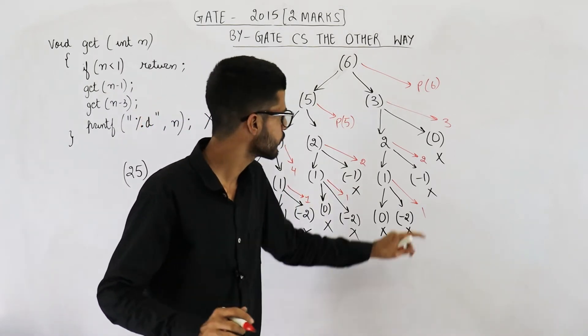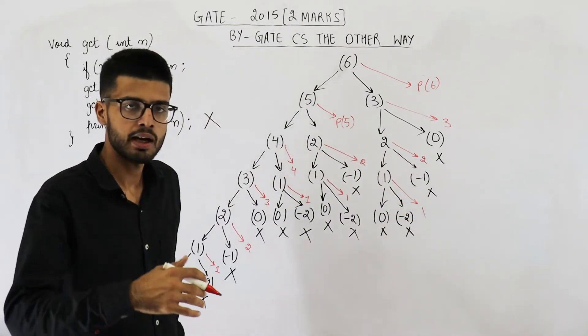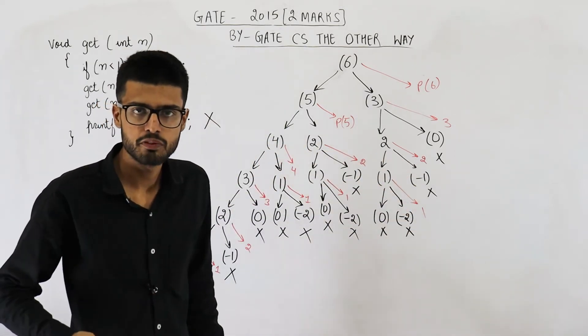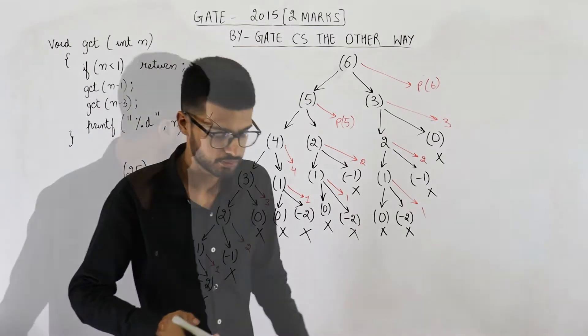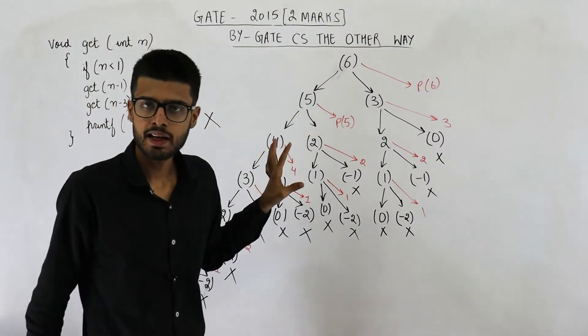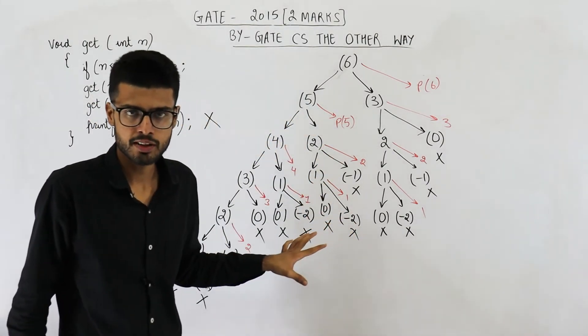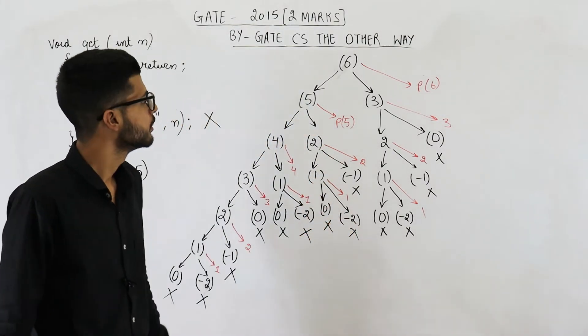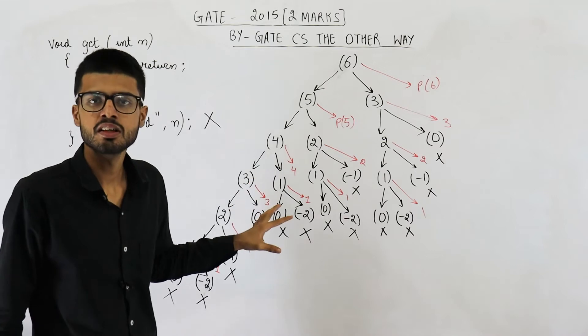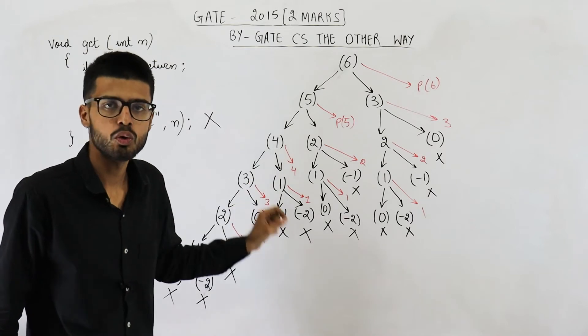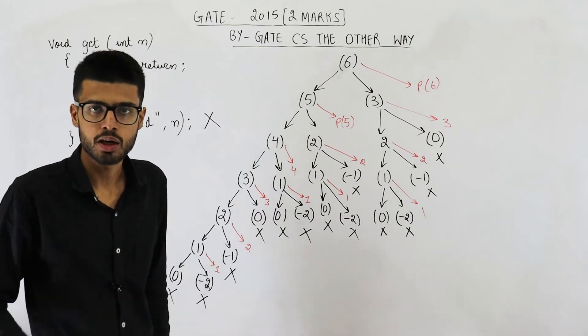Let me confirm if everything is okay. Now the entire tree is drawn. There is no mistake in this tree. Now we just need to find the output of this program.